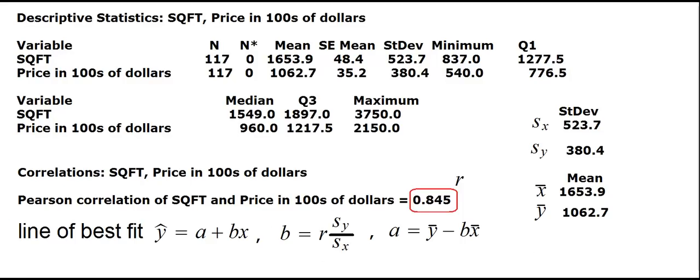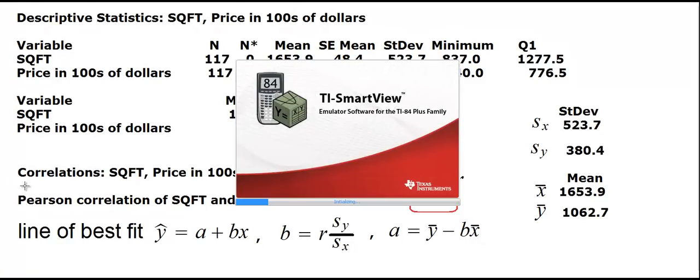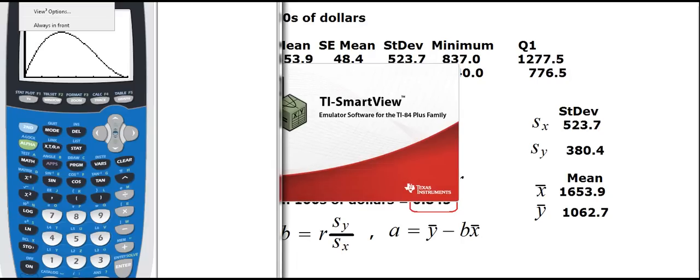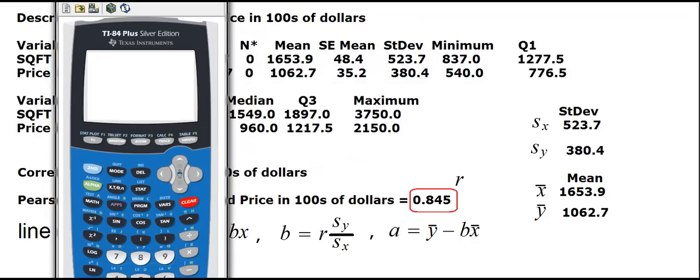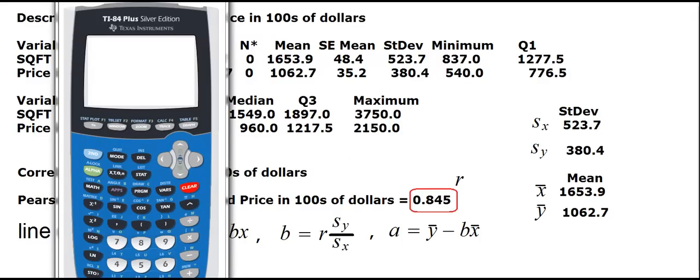Now let us compute the slope of the line. Let me open up my calculator. So how do we compute the slope? The slope is b = r × (sy/sx). We just have to do simple calculations. We have r = 0.845 times 380.4 divided by 523.7. So that is the value of b, the slope of the line.